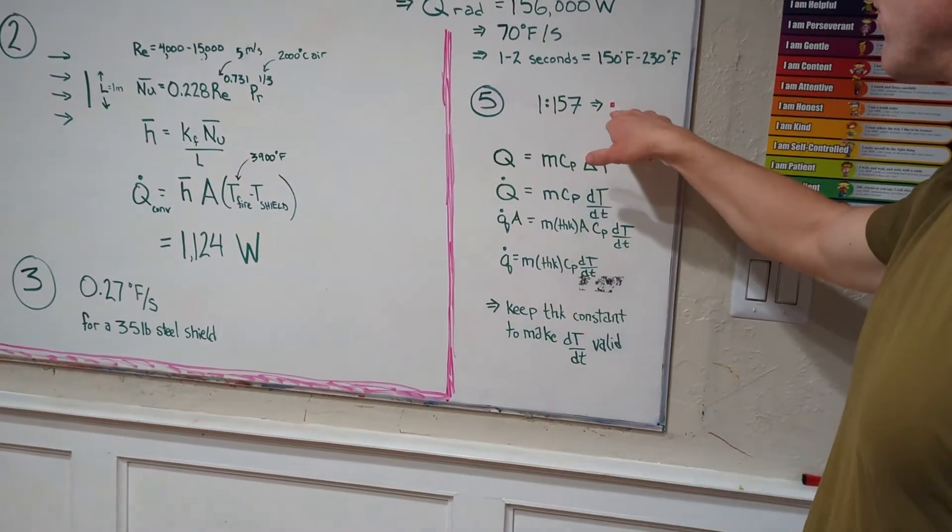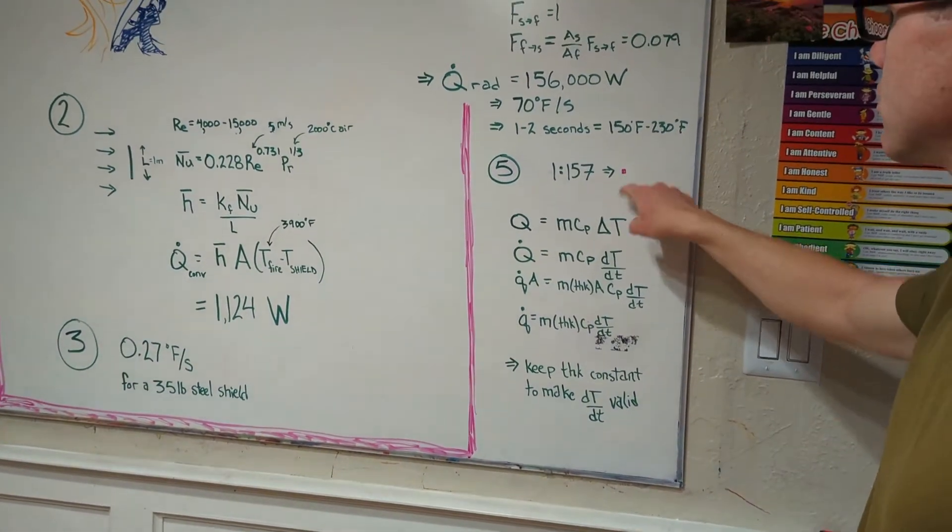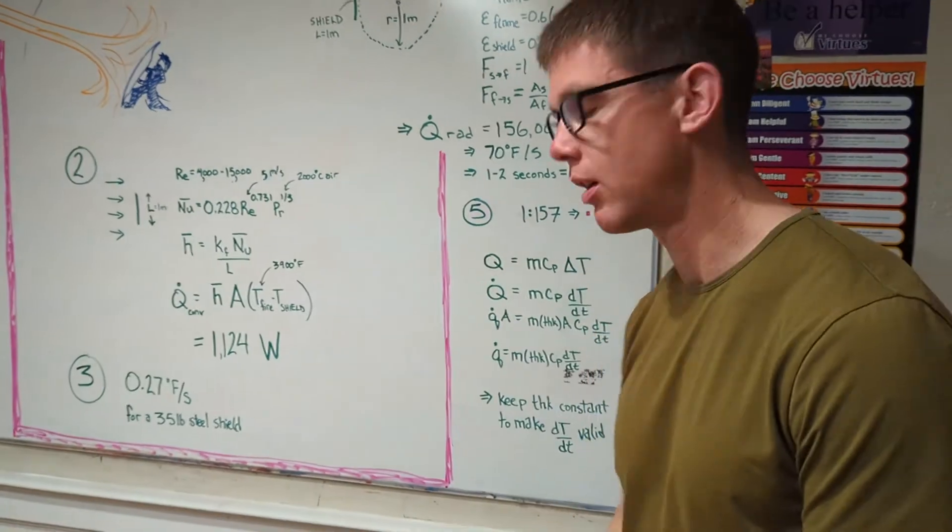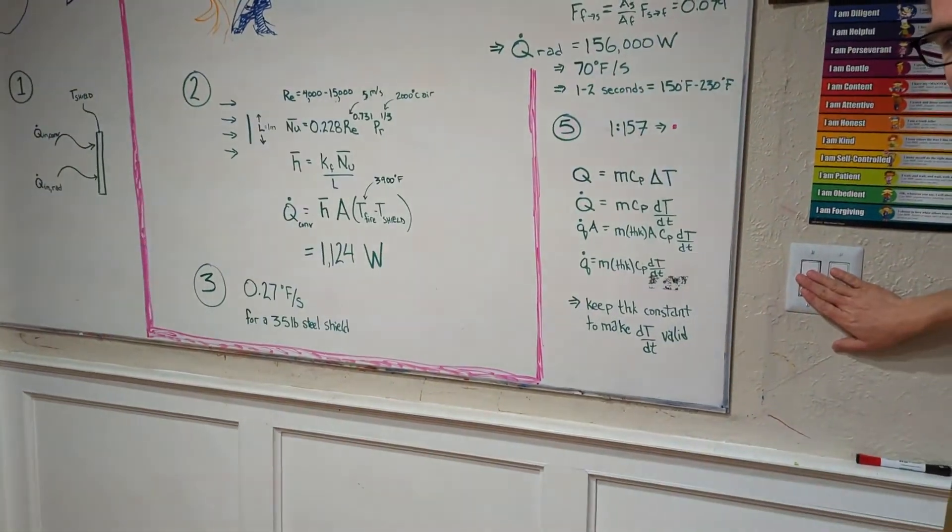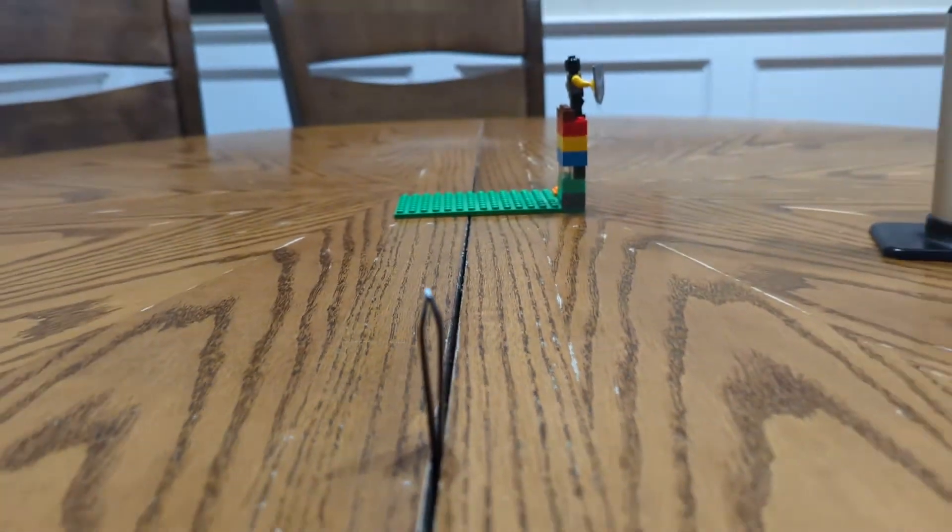But aluminum foil is 157 times thinner. So my first thought was let's make an aluminum foil shield that's 157 times smaller. So that's what we've got here and we're going to hit it with the kitchen torch. Shield melted pretty much instantly. Not looking like good news for a knight.